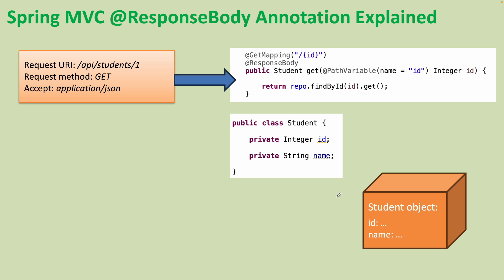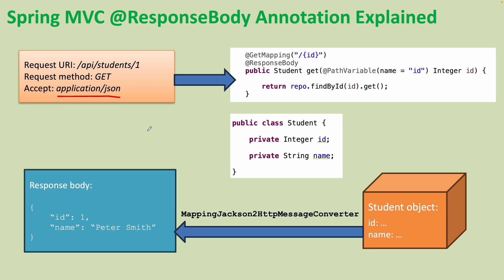This handler method will return a Student object with the fields id and name populated with actual values from the database, for example. Because the accepted content type of the client is JSON, the MappingJackson2HttpMessageConverter serializes this Student object into a JSON document sent in the response body. The JSON document represents a Student object with two fields — id and name — with values like id: 1 and name: Peter Smith. So this makes sense, right?